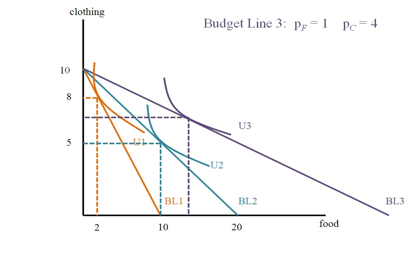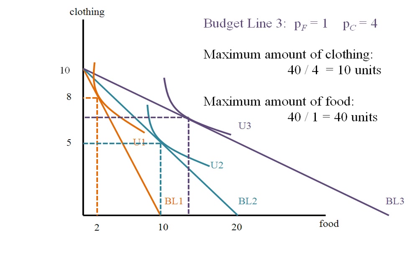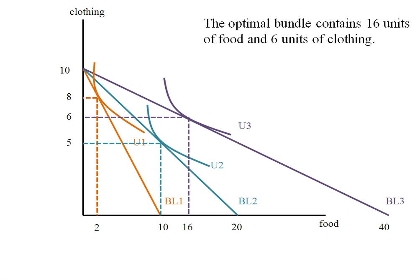Budget line three is for a price of food of one dollar and a price of clothing of four dollars. Since the price of clothing hasn't changed, we can still buy ten units, but the price of food has fallen further and we can now buy forty units. The optimal bundle here is sixteen units of food and six units of clothing.